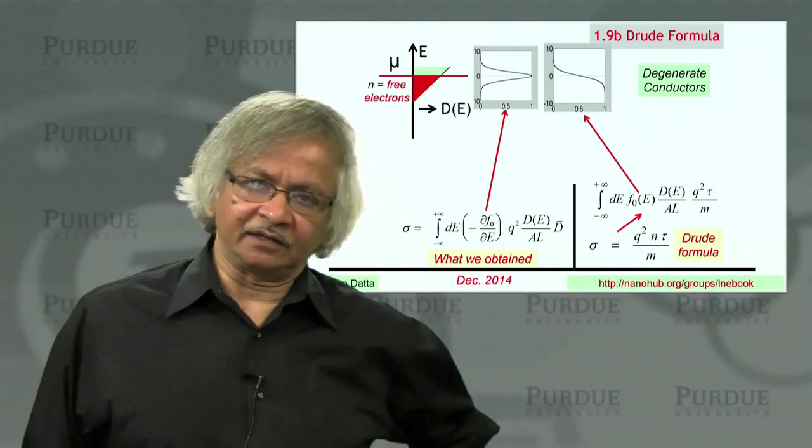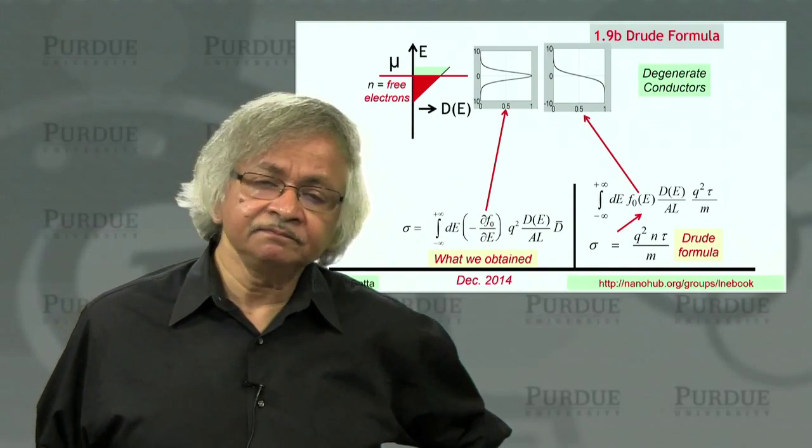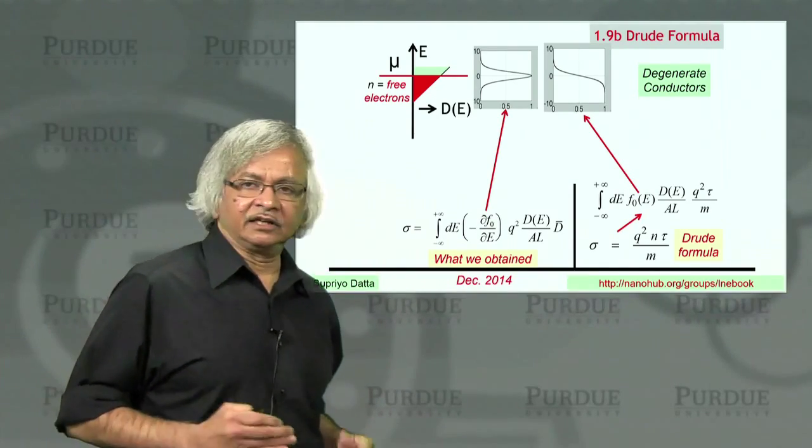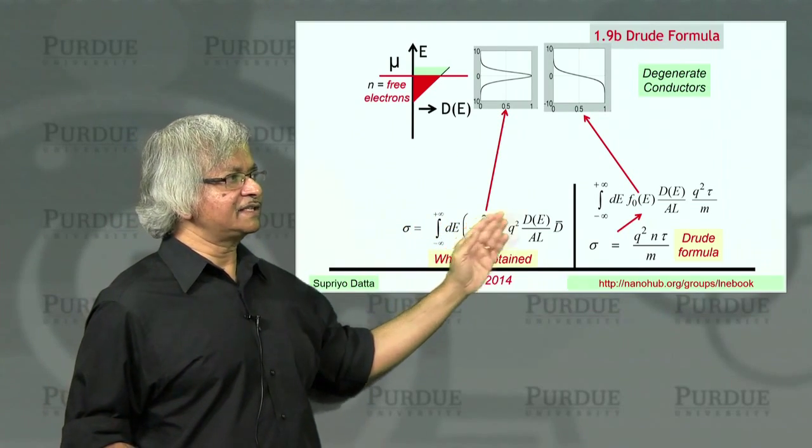And in the next unit of this course, actually we'll talk more about this. We'll try to show under what conditions this and this actually end up giving you the same answer. But for the moment, what I want to tell you a little more about is non-degenerate conductors. That is, people who deal with semiconductors often use this non-degenerate approximation. And for non-degenerate conductors, it's relatively easy to see the connection between this and that.